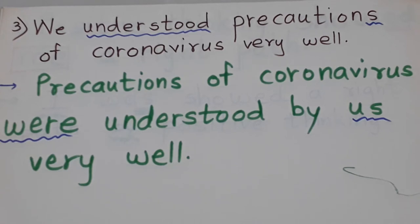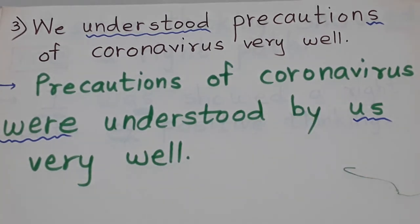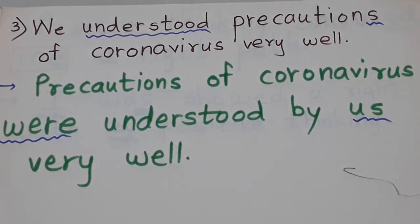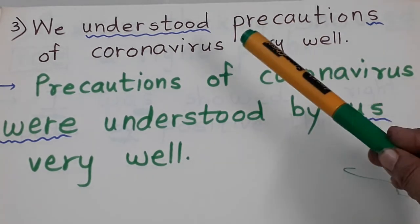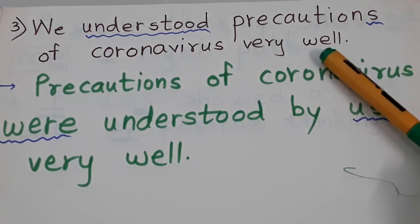Next sentence: We understood precautions of coronavirus very well. The verb underlined is understood. This is the past tense of understand. Precautions is the object. Now should we take the whole phrase as object? No. What are the precautions? Very well means thoroughly. So what was understood thoroughly? So understood becomes the verb and very well is an adverb describing it.